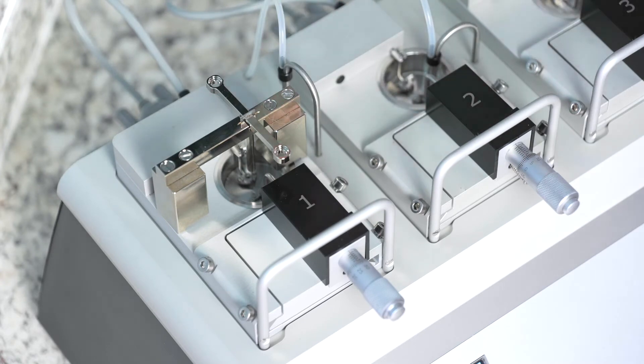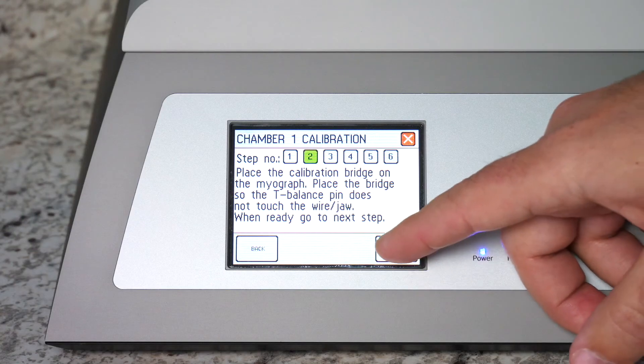You want the T-balance to drop in behind the wire on the force transducer side as close as possible to the wire without touching it. And then hit next step.